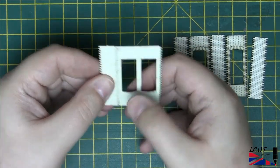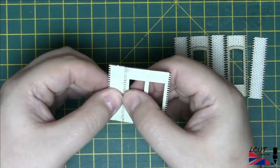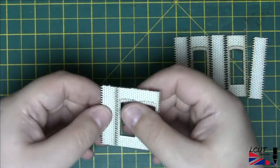We recommend starting the assembly by gluing the shell together first. Windows need to be left out and painted separately to achieve crisp lines.